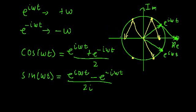We're able to stay along the real axis, and we scale it — we divide by 2 — so that it remains between 1 and negative 1, because otherwise it would go from 2 to negative 2. So we can see how this cosine oscillation is just a sum of two rotational functions.